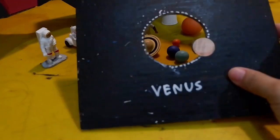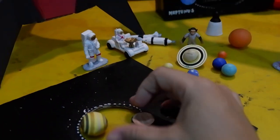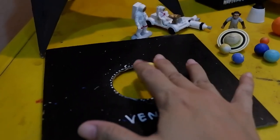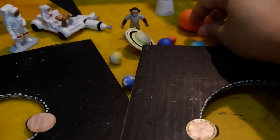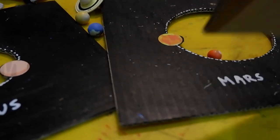Ini dibuka, ini ada Venus. Nah ini Venus. Lalu, nah ini Mars yang kecil, ini Mars yang warna ini.